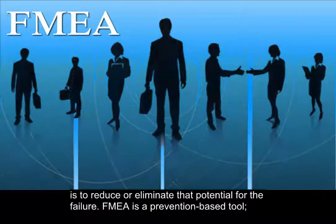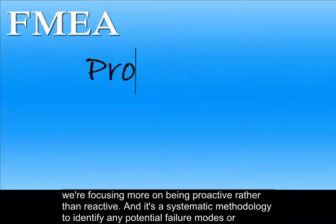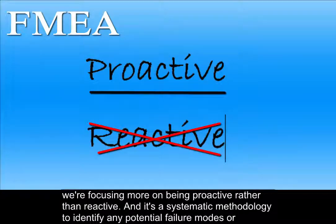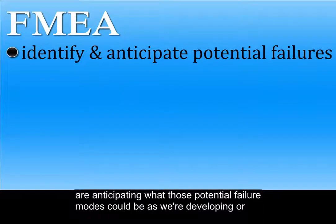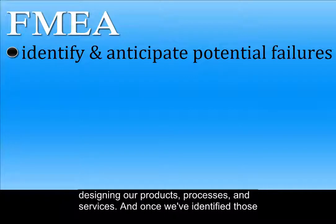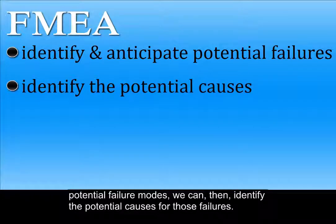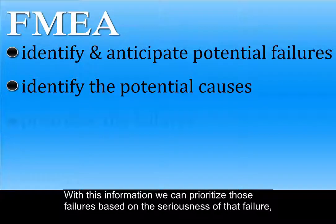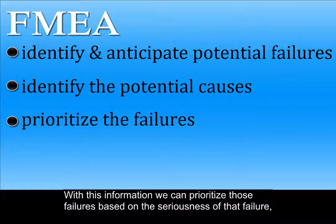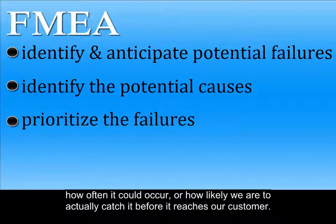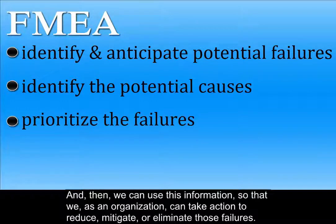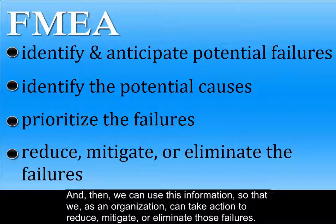FMEA is a prevention-based tool. We're focusing more on being proactive rather than reactive. It's a systematic methodology to identify any potential failure modes, anticipating what those potential failure modes could be as we're developing or designing our products, processes, and services. Once we've identified those potential failure modes, we can then identify the potential causes for those failures. With this information, we can prioritize those failures based on the seriousness of that failure, how often it could occur, or how likely we are to actually catch it before it reaches our customer. Then we can use this information so that we as an organization can take action to reduce, mitigate, or eliminate those failures.